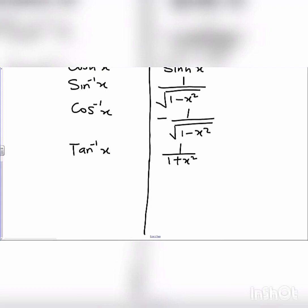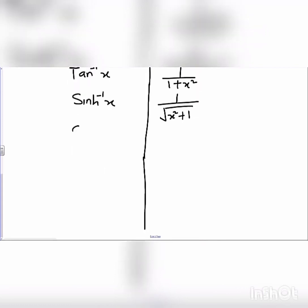When we have sinh inverse of x and we differentiate this, it will give us 1 over square root of x squared plus 1. When we have cosh inverse of x and we differentiate this, it will give us 1 over square root of x squared minus 1. And when we have tanh inverse of x and we differentiate this, it will give us 1 over 1 minus x squared.